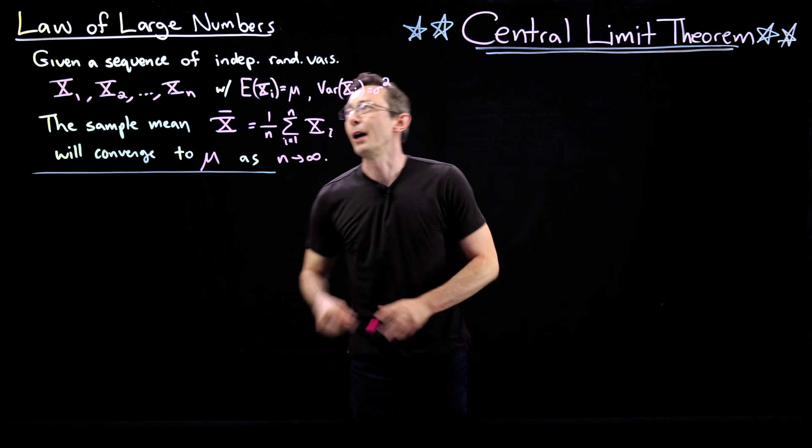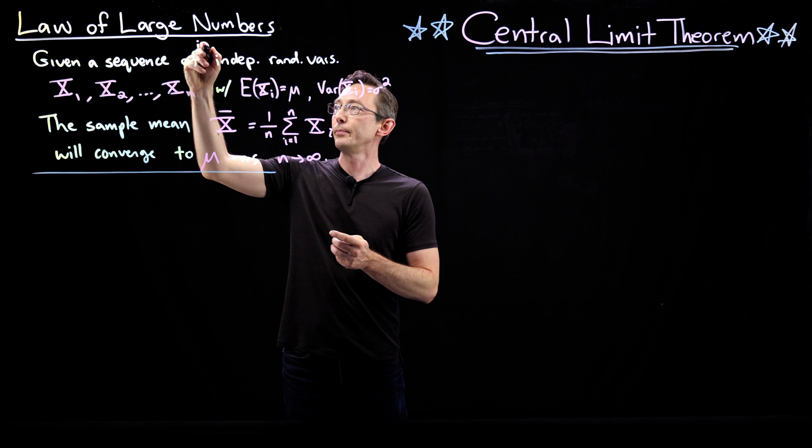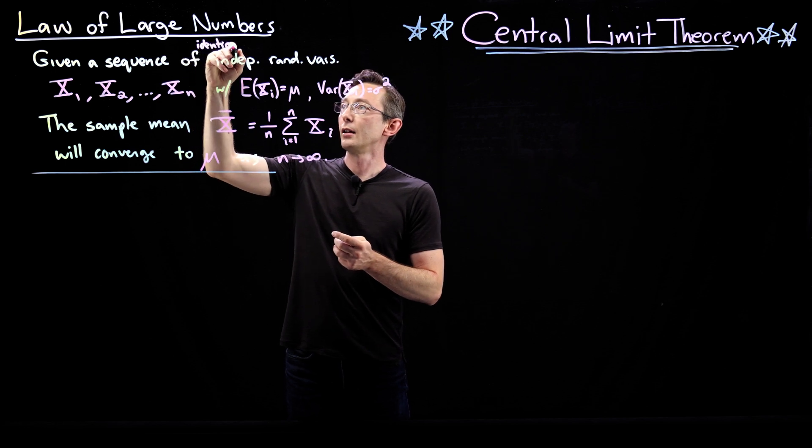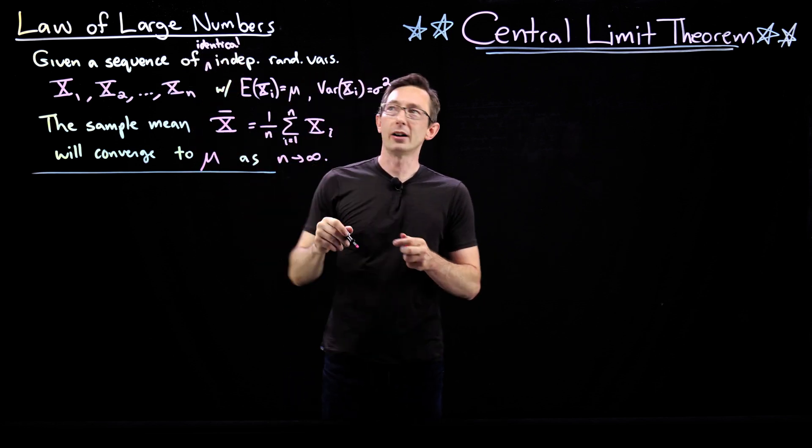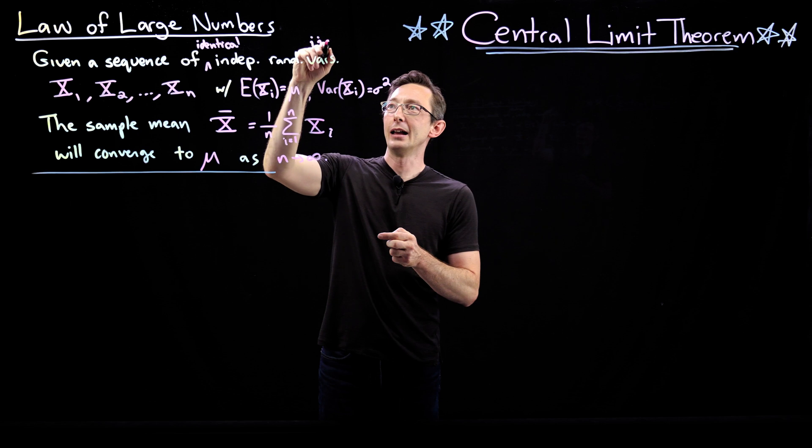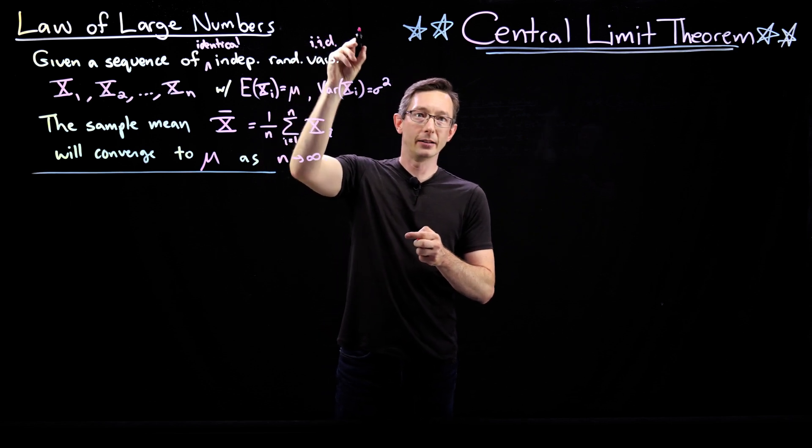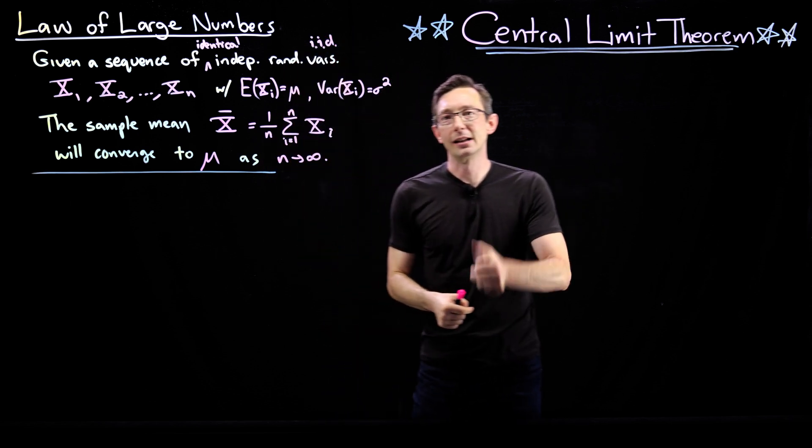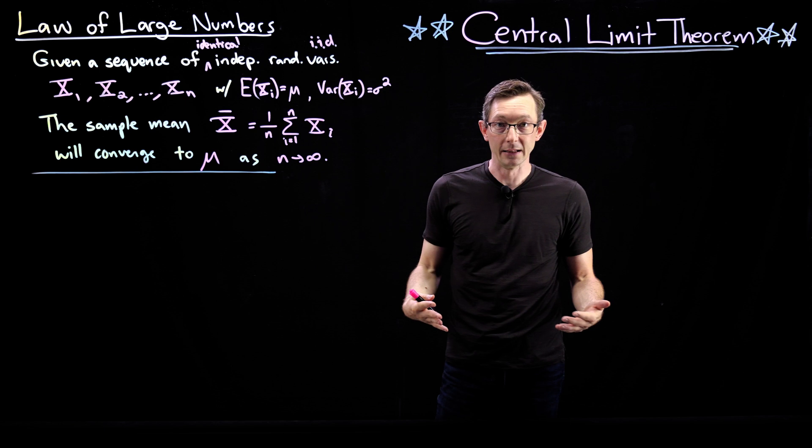Okay, I should probably have written sequence of identical independently distributed random variables. Sometimes this is called iid, identical independently distributed. And that just means that it's the same fair coin being flipped n times.